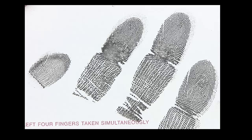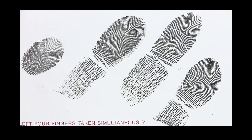Let's review a series of simultaneous prints and determine which patterns are radial and which are ulnar loops. The first set is the left hand — can you see any radial loops? All of these patterns are ulnar loops as they slant to the little finger side. In the next set, do you see a radial loop? Three are ulnar loops, and one is the radial loop as it slants towards the thumb side.